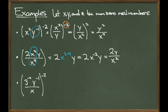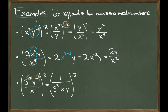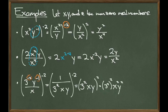For our last example, consider the quantity 3 to the negative 2 times y to the negative 1, all divided by x, while everything is raised to a power of negative 2. I prefer to take care of negative exponents inside a set of parentheses first, so focus on the 3 to the negative 2 and y to the negative 1 and move them down to the denominator, while leaving behind a 1. We then take care of the power of negative 2 on the outside by flipping the fraction and dropping the negative. Applying the power of a product rule to each term gives us a final answer of 81 times x squared times y squared.